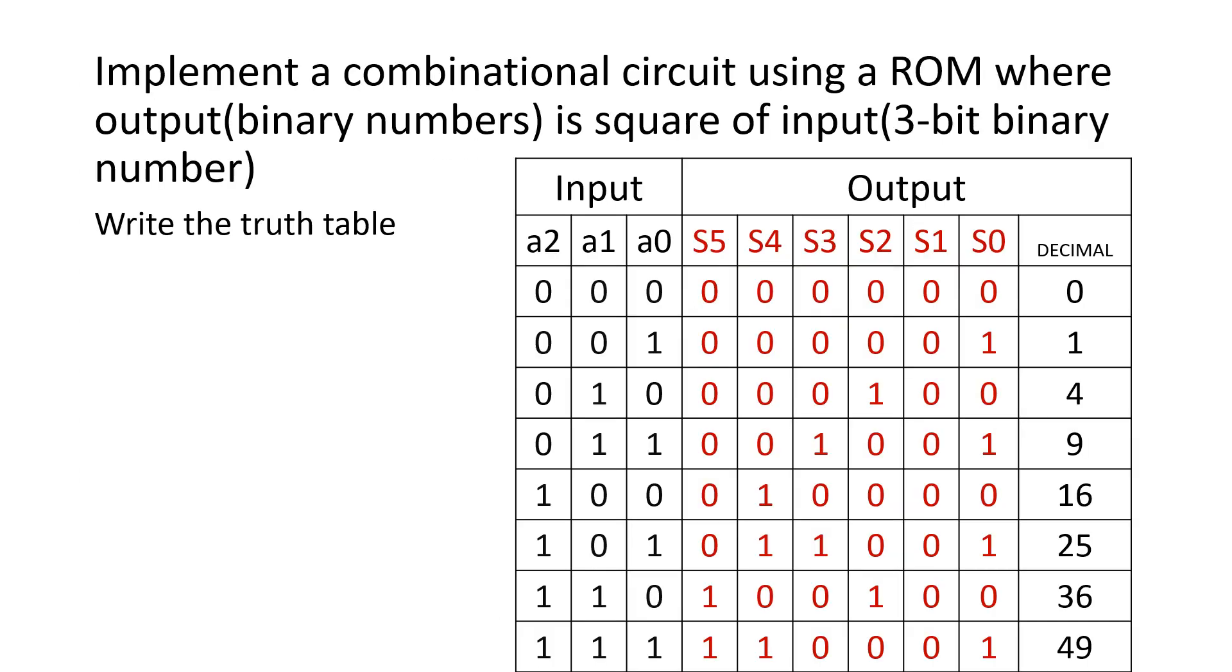Let us go to the second example. Here, we are going to implement a combinational circuit where output is square of input and input is going to be a 3 bit binary number. Once again, we will create a truth table for it. If input is 0, we know output is 0. If input is 1, output is 1. 2 square is 4, 3 square is 9, 4 square 16, 5 square 25, 6 square 36 and 7 square 49.